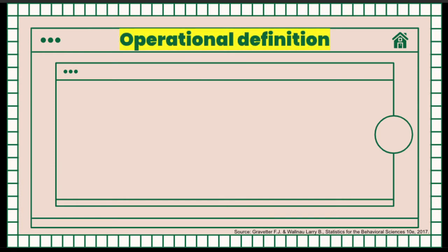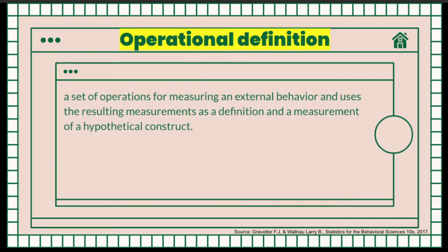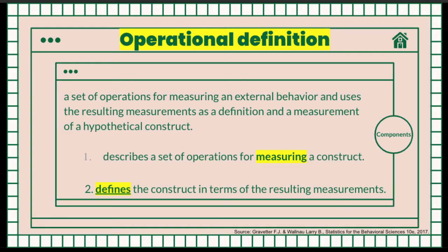Operational definition is a set of operations for measuring an external behavior and uses the resulting measurement as a definition and a measurement of a hypothetical construct. It has two components: number one, describing a set of operations for measuring constructs, and number two, it defines the construct in terms of the resulting measurements.